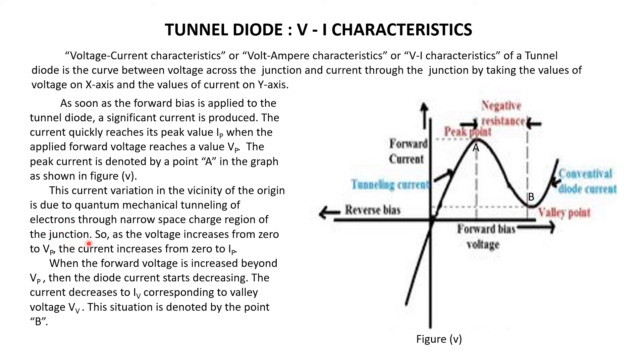This current variation in the vicinity of the origin is due to quantum mechanical tunneling of electrons through narrow space charge region of the junction. As voltage increases from 0 to Vp, current increases from 0 to Ip. This fast increase in current is only due to quantum mechanical tunneling.